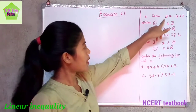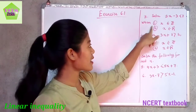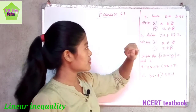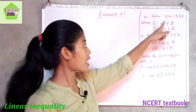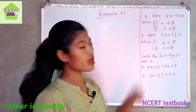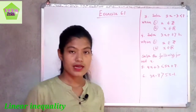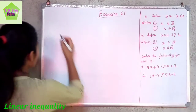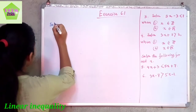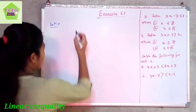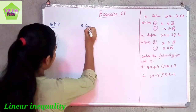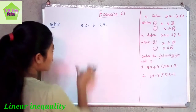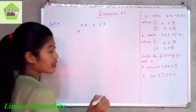Solve 5x minus 3 less than 7, when x belongs to an integer and when x belongs to real numbers. We have to solve this linear inequality 5x minus 3 less than 7 for both cases. We are given that 5x minus 3 less than 7, and to find the value of x we apply the rules of linear inequality.